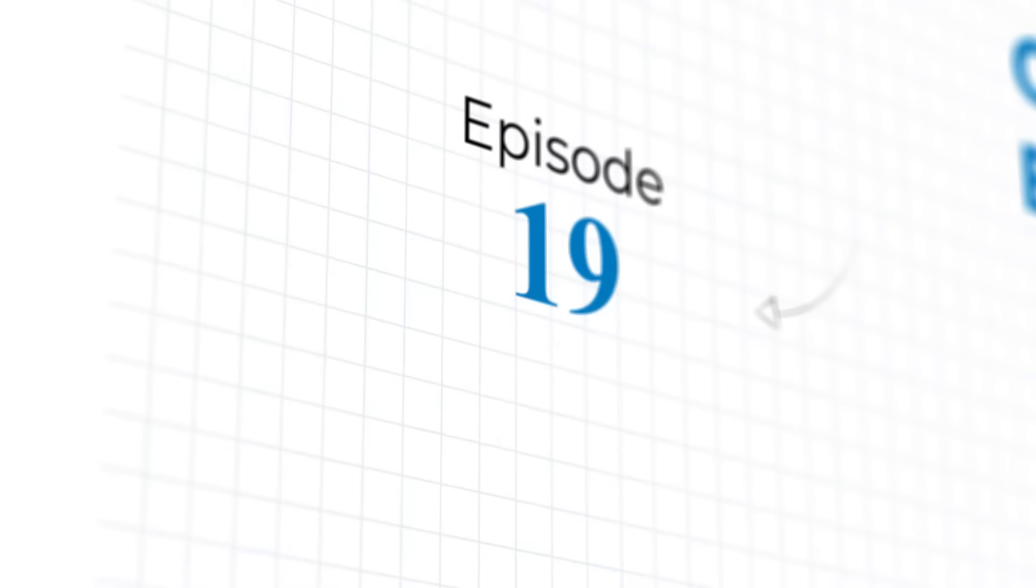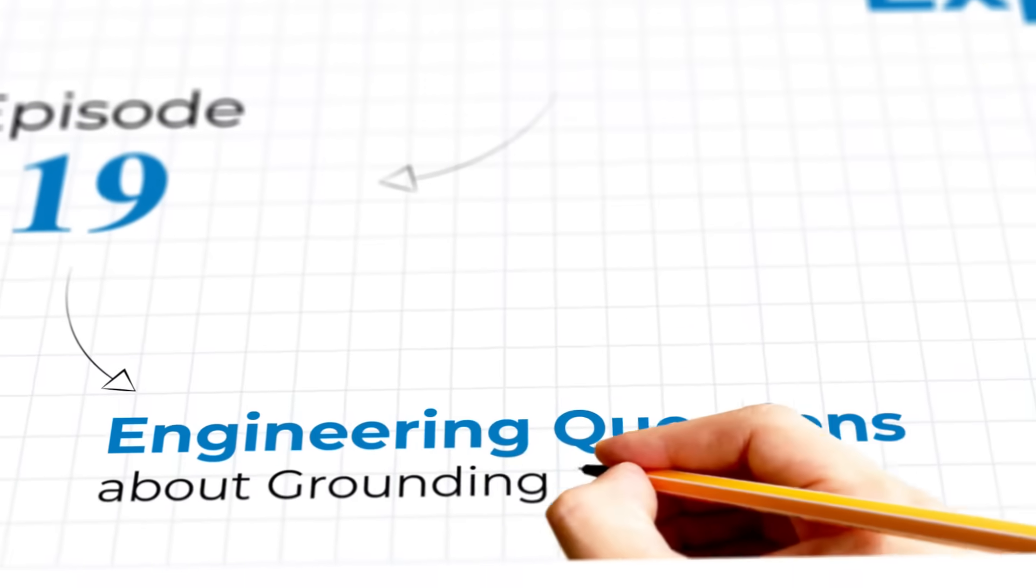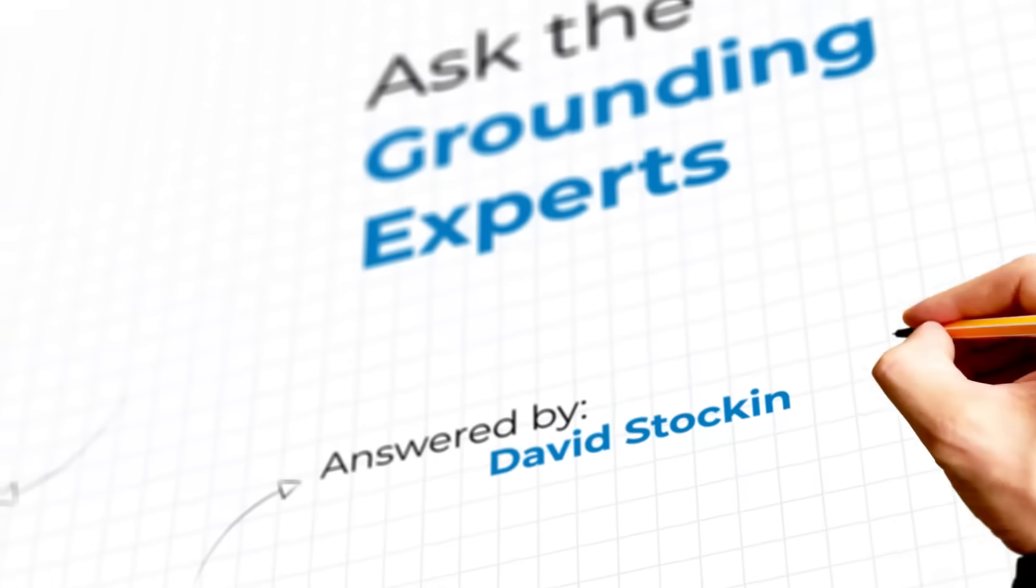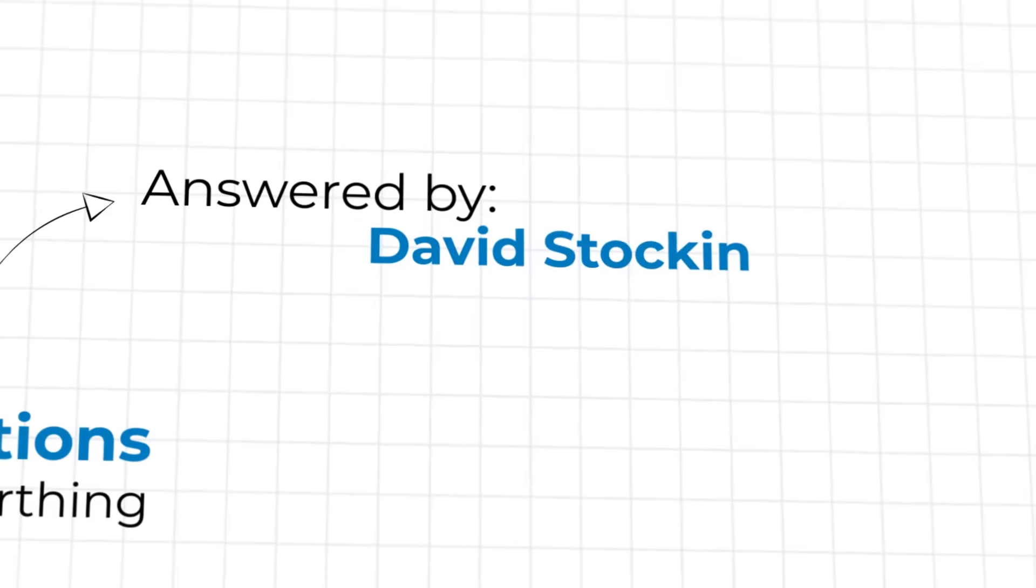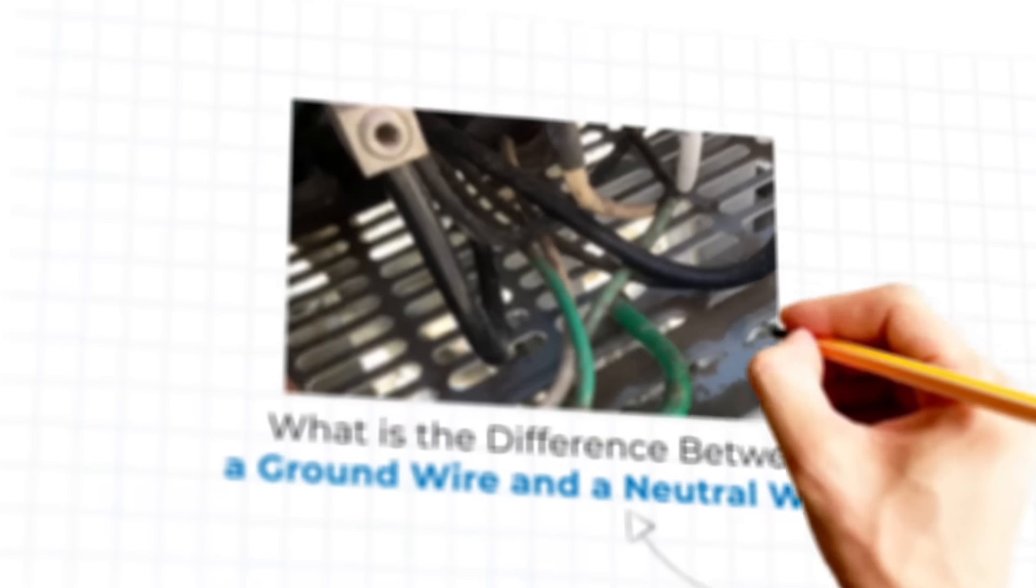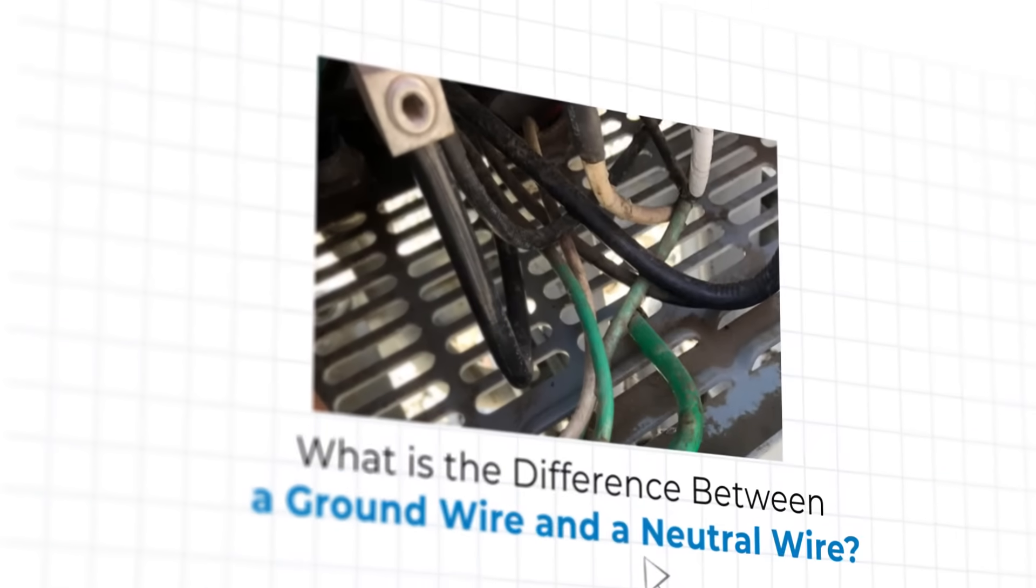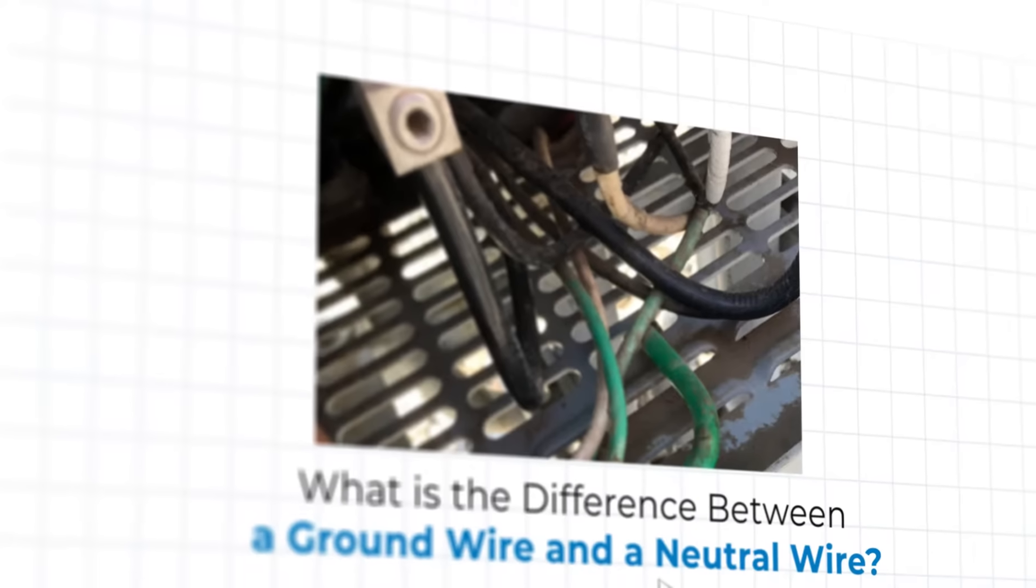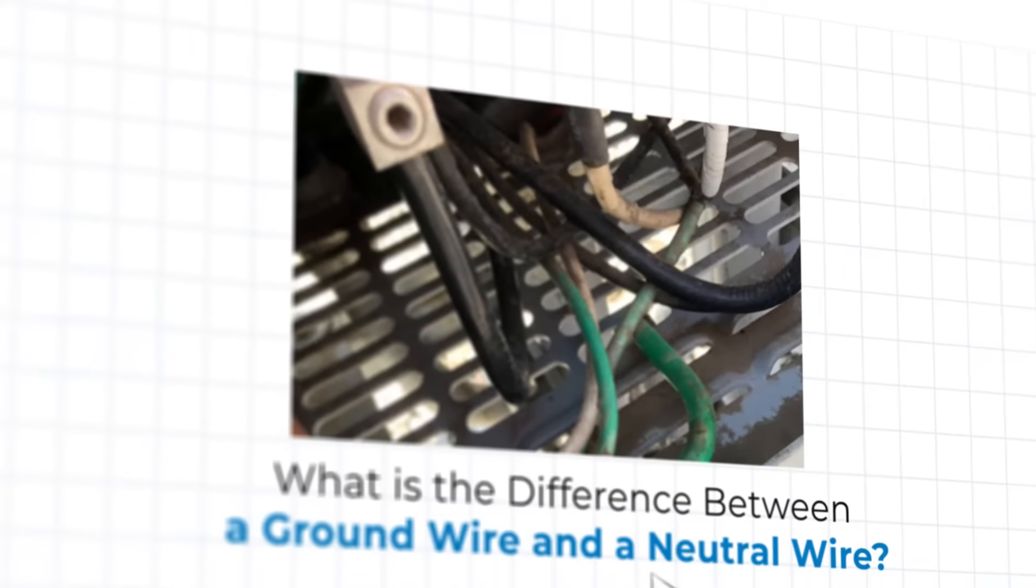Welcome to episode 19 of Ask the Grounding Experts, where our experts from ENS Grounding Solutions answer your engineering questions about the world of grounding and earthing. Today our fearless leader David Stockin answers a question emailed to us by Martin G: What is the difference between a ground wire and a neutral wire? Fill us in David.